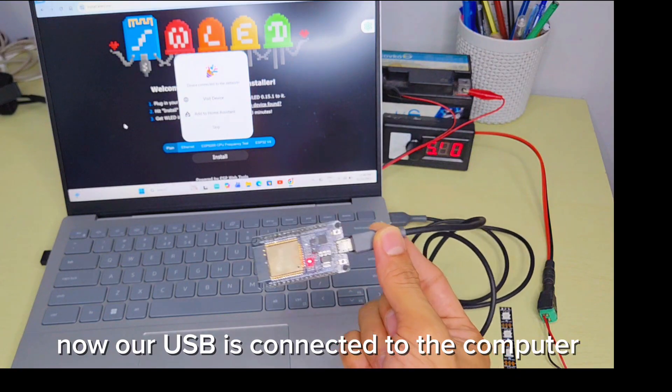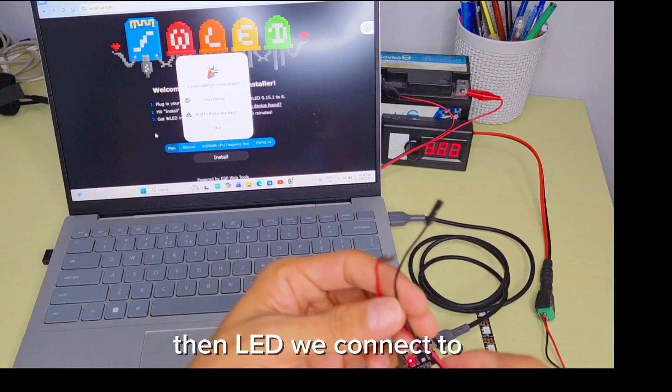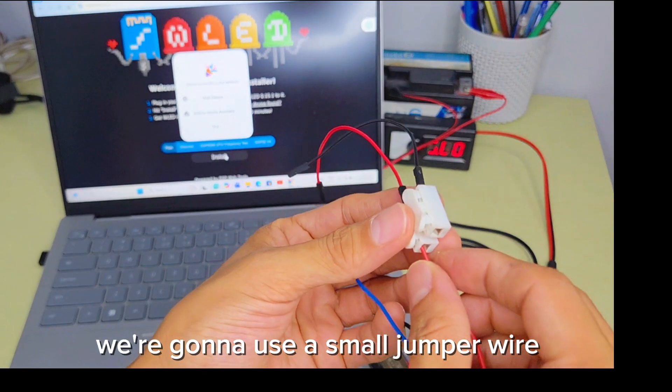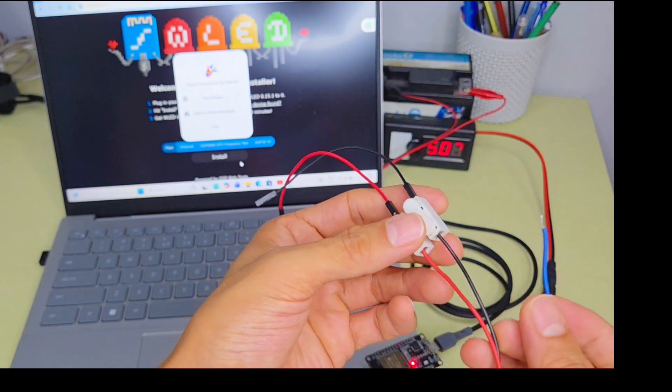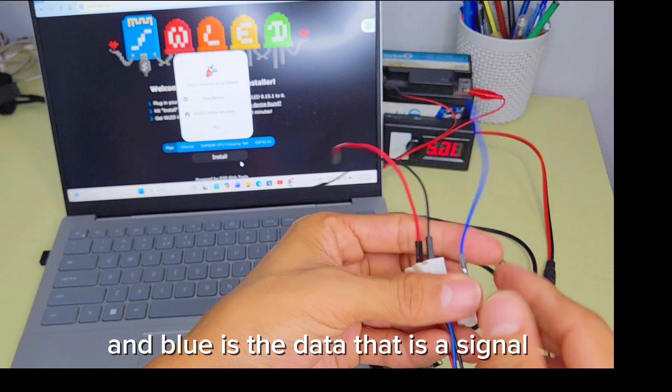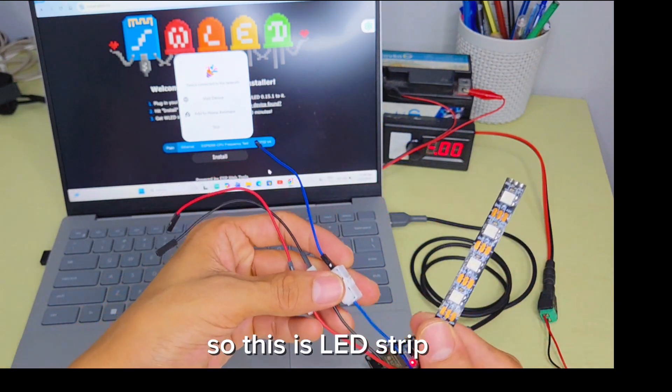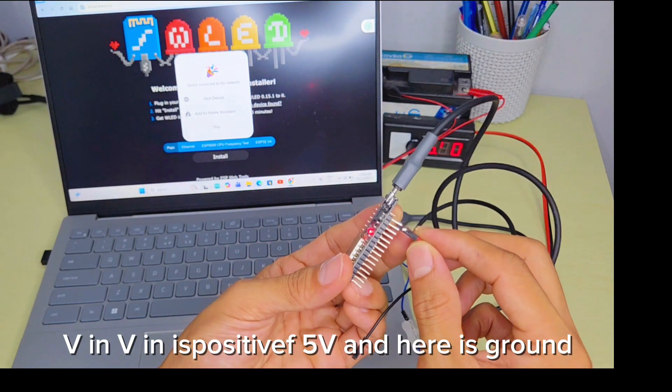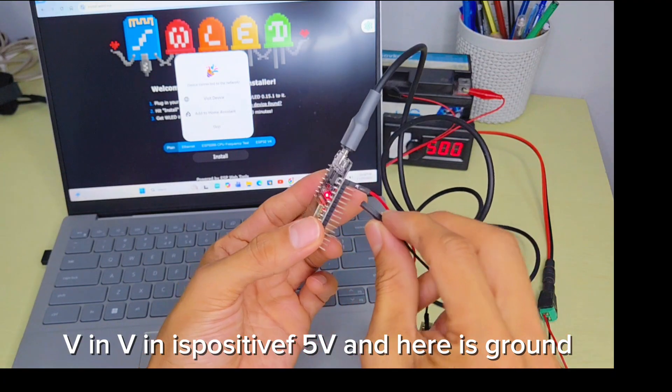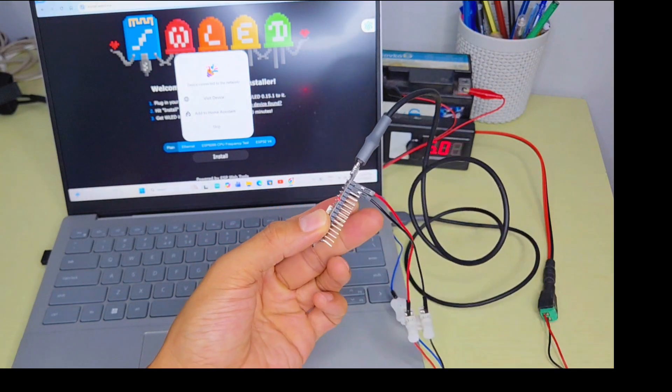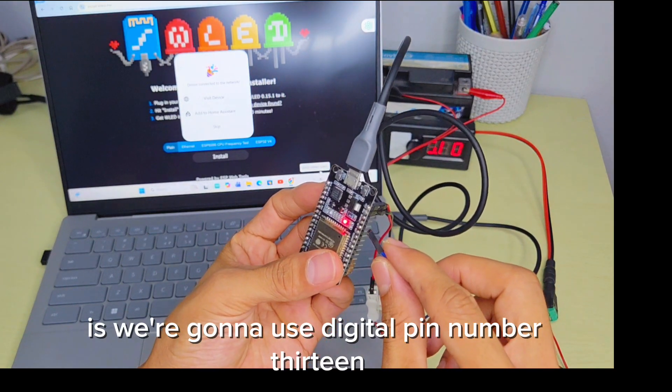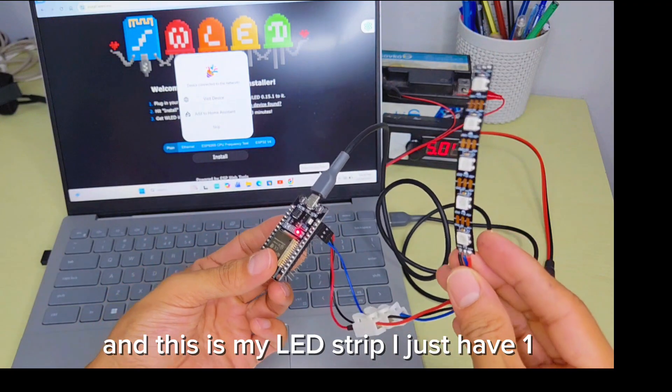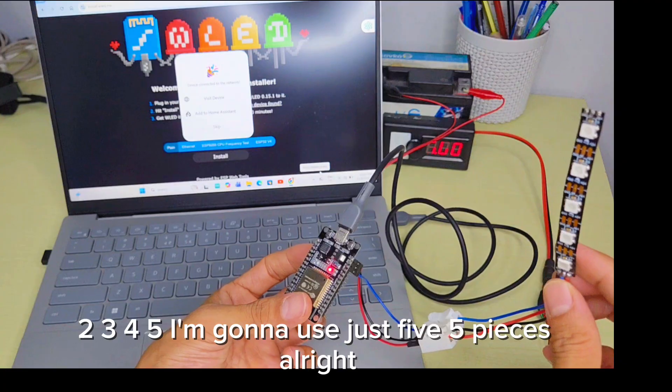Right now our ESP is connected to the computer. Then LED we connect to VCC 5.0 to VIN. We're going to use a small jumper wire. Black is negative, blue is the data signal. This is the LED strip. Positive 5.0 connects to VIN. VIN is positive 5.0. Here is ground. We're going to use digital pin number 13. I just have five pieces of LED.